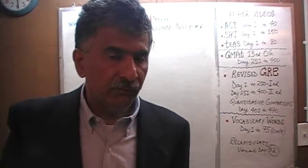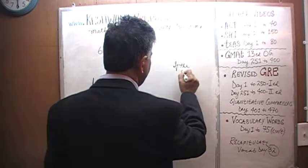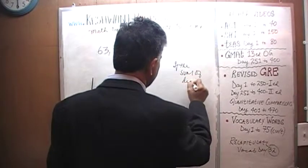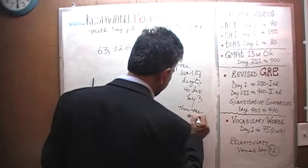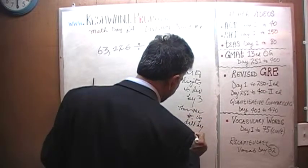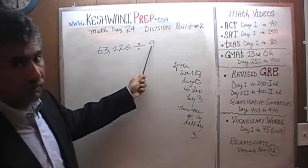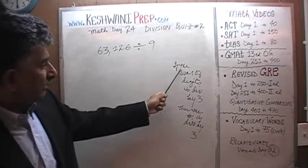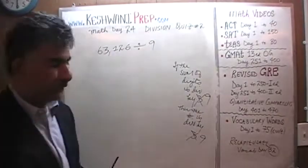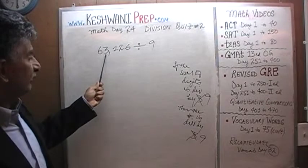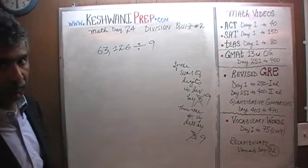Right now I am going to briefly tell you how to figure out if a number is divisible by 9. If the sum of the digits is divisible by 9, then the number itself is divisible by 9. Is this number even divisible by 9? Let's find out. 6 plus 3 is 9, so that part is not going to be an issue. 1 plus 2 is 3, 3 plus 6 is 9. So this number should be divisible by 9. Let's do it, shall we?